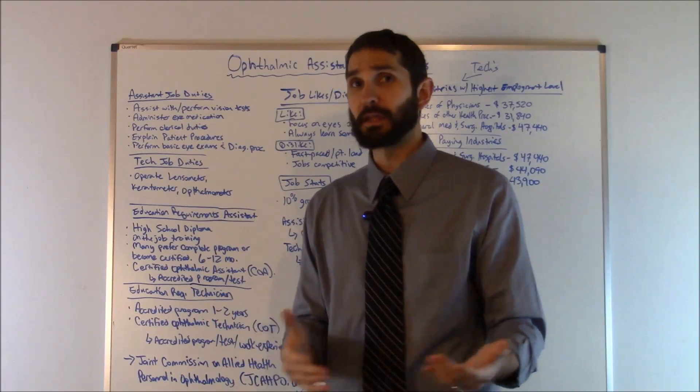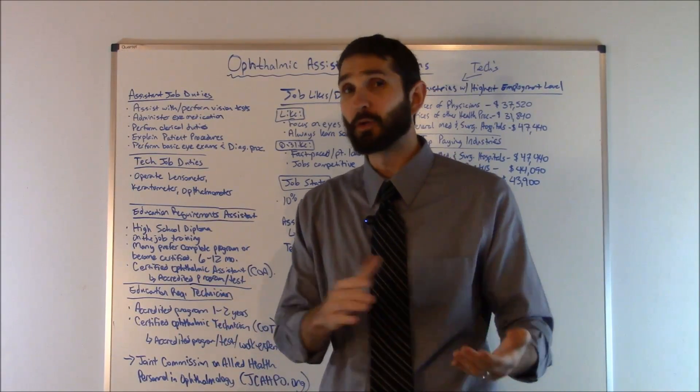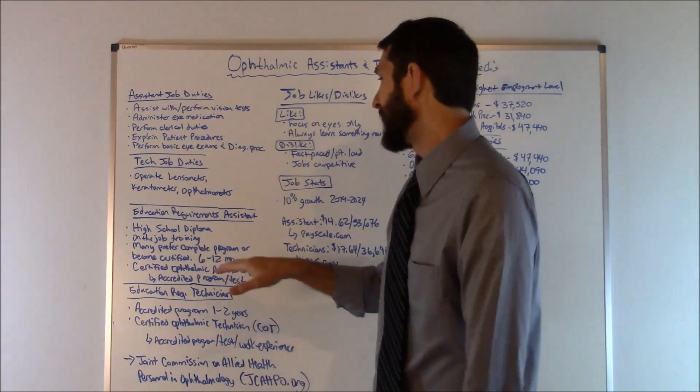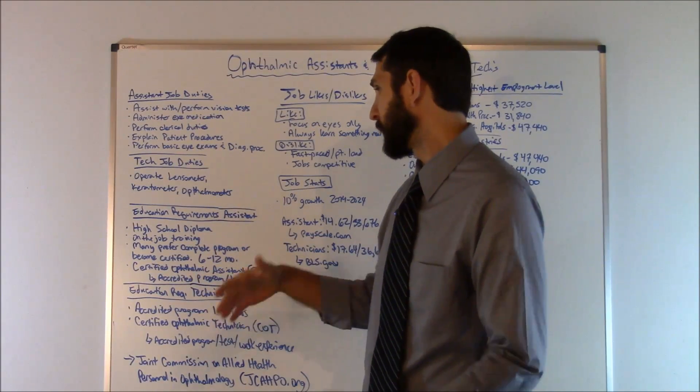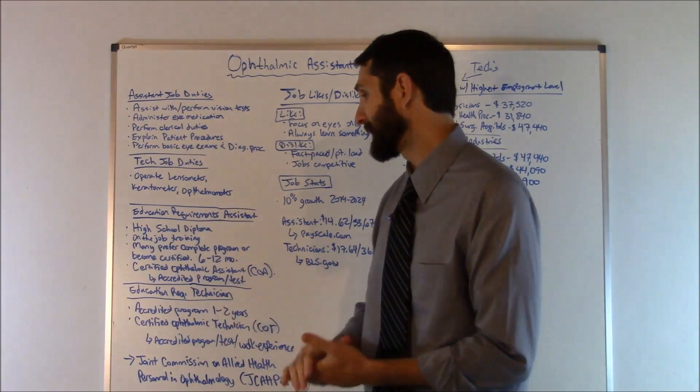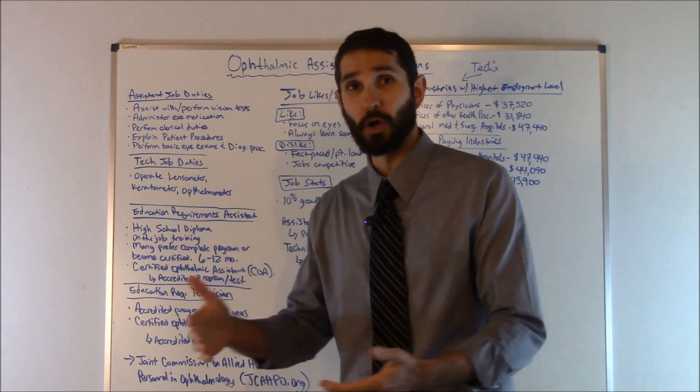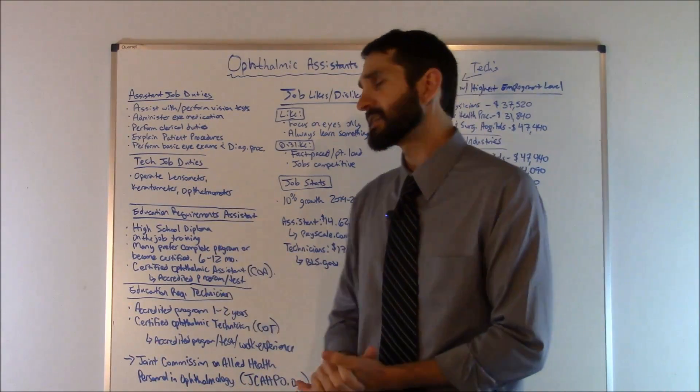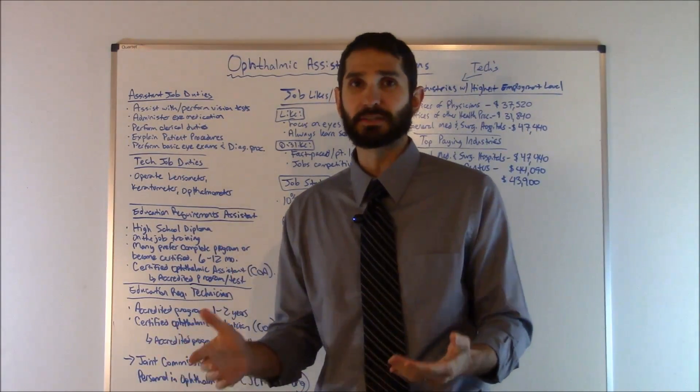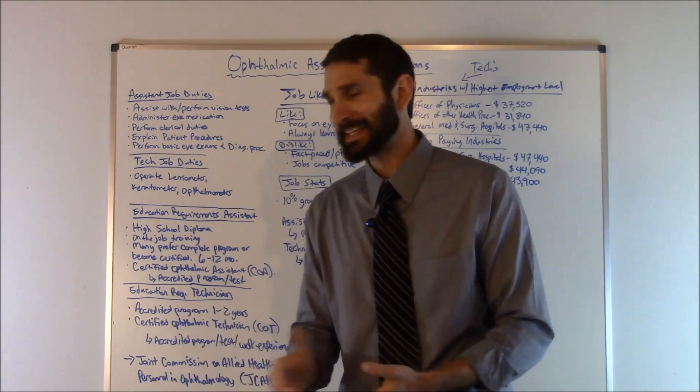However, a lot of employers do prefer that you complete an accredited program and/or have certification. You can become certified, which is the certified ophthalmic assistant or the COA designation, and that usually takes about six to twelve months through an accredited program, and you'll have to pass an examination.